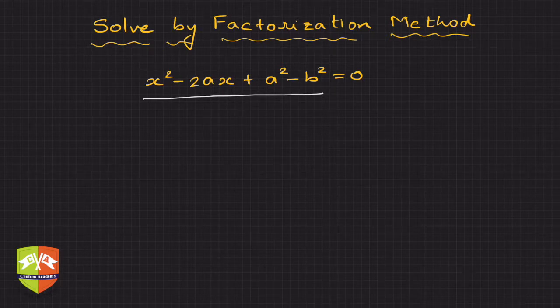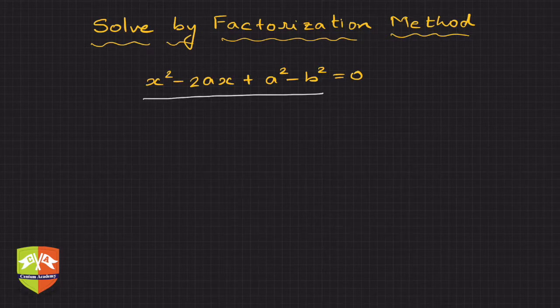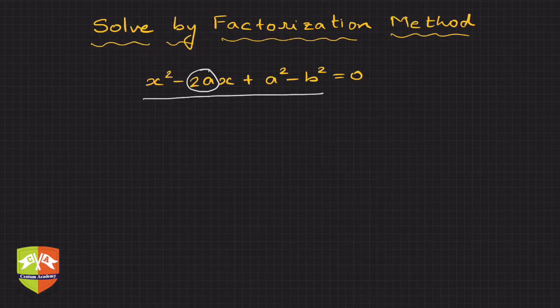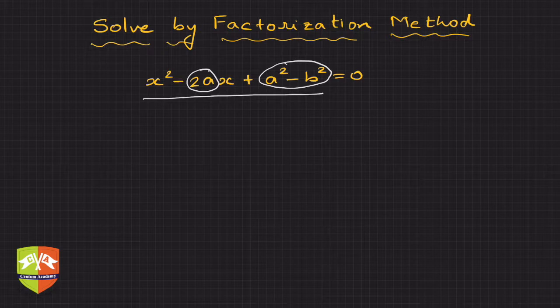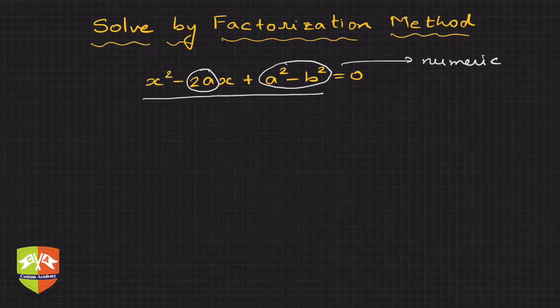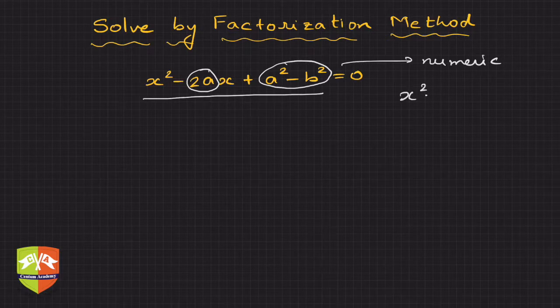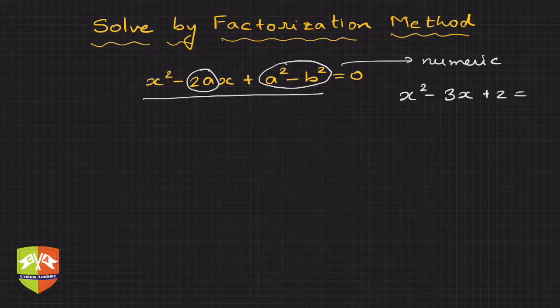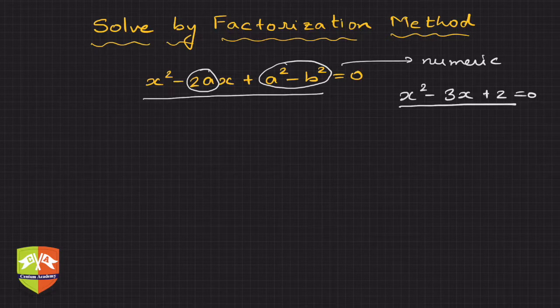If you see, we have some non-constants here. Though 2a and a² - b² represent constants, they are not numeric. Earlier you saw examples like x² - 3x + 2 = 0 and you were asked to solve this using factorization method. But in this question the coefficients are non-numeric, so how to go about it?